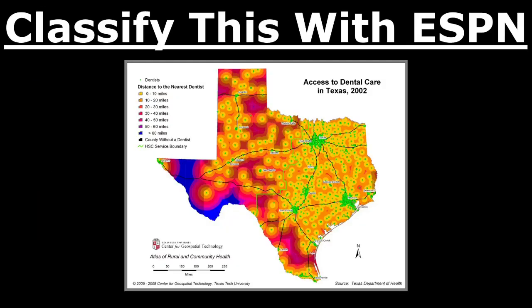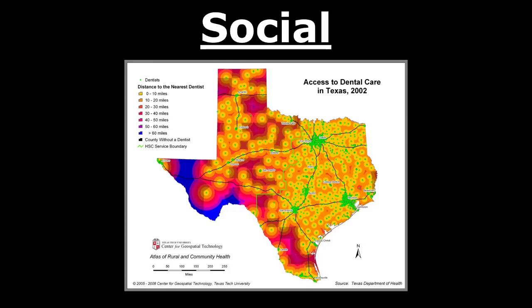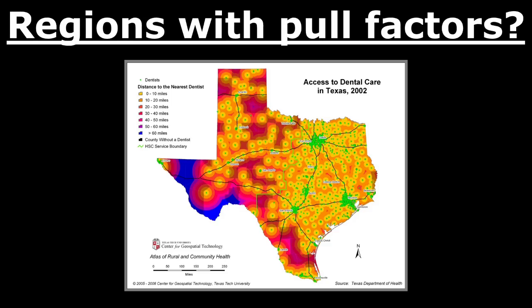Let's classify this example with ESPN. It's a map showing access to dental care in the region of Texas. This is going to be social, because dental care is basically healthcare — your teeth need to be healthy. Looking for a region in Texas that has this primarily as a pull factor, that would be the eastern area, where yellow and orange on the map key indicate easier access to dentists within 20 miles. In western Texas, some places have to travel over 60 miles to see a dentist.